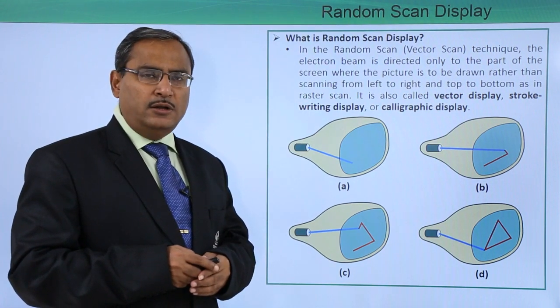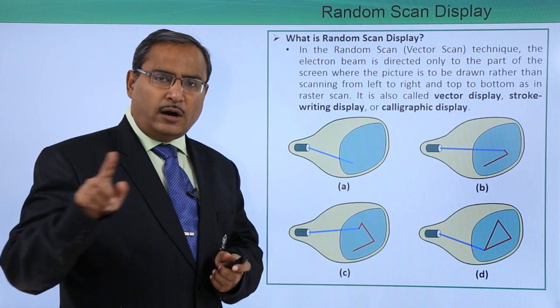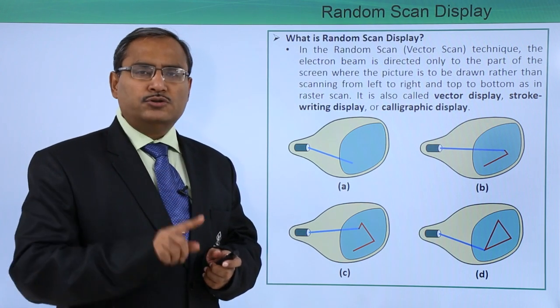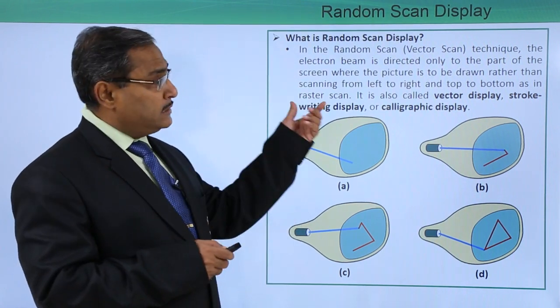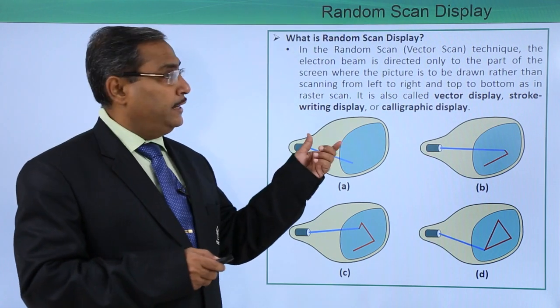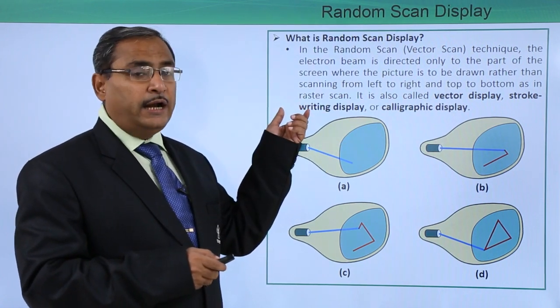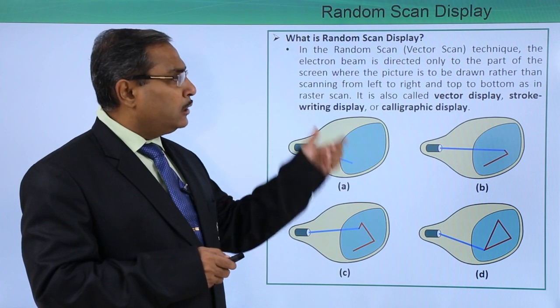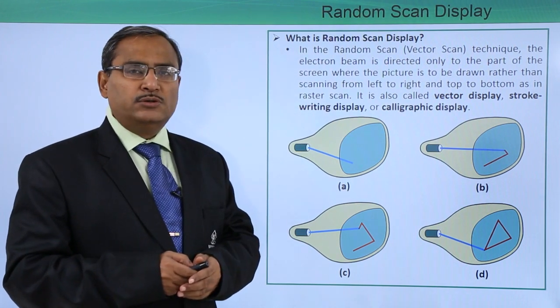In case of raster scan, we traced all the area of the screen horizontally and also we are having the vertical retrace. But in case of vector scan in this particular technique, the electron beam will be directed only for that part of the screen where the picture is going to be drawn.